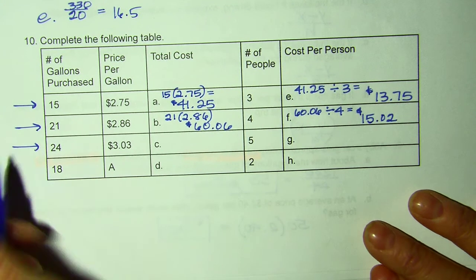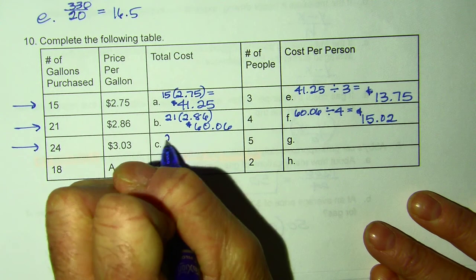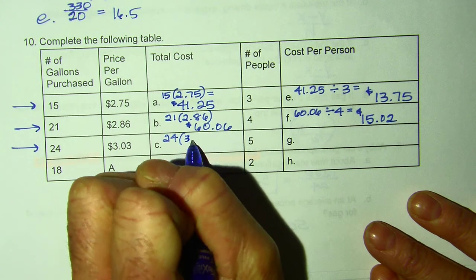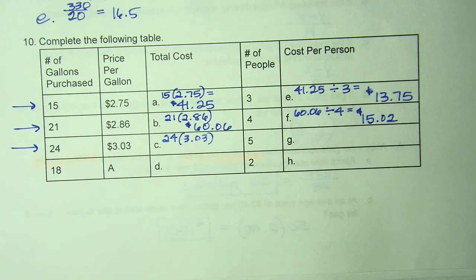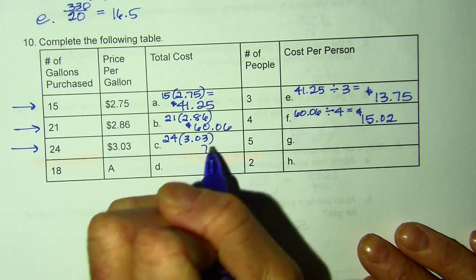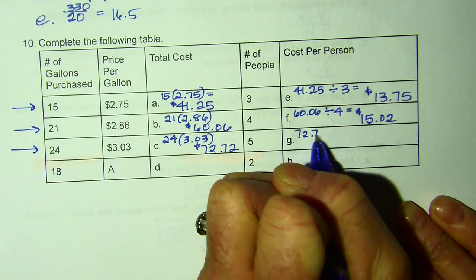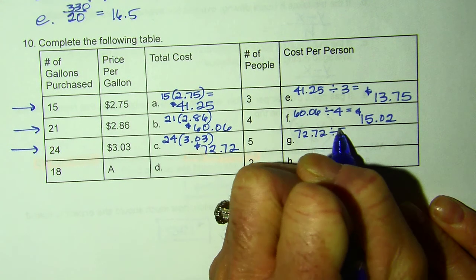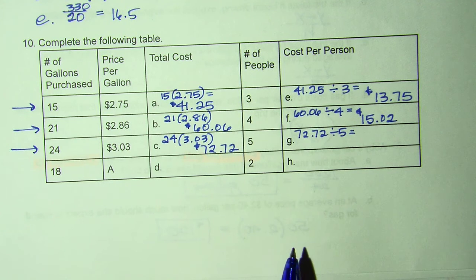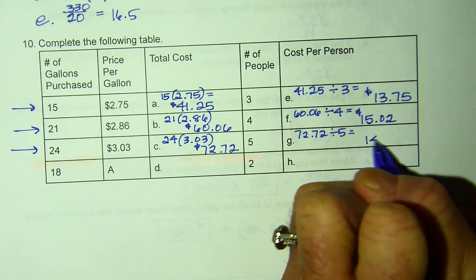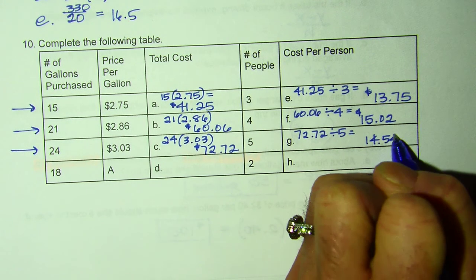And we would owe each about $15.02. Next row, 24 gallons. And at this gas station, there's one just like this on your homework. So that would cost us $72.72. If I wanted to find price per person, I'm simply going to divide by how many people, which in this case is five. And I'm going to round it to the nearest penny, so $14.54.